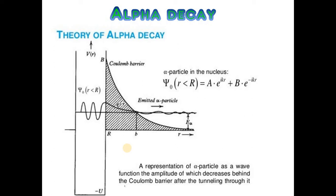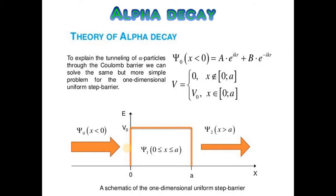A representation of the alpha particle as a wave function, the amplitude of which decreases behind the Coulomb barrier after tunneling through it. To explain the tunneling of alpha particles through the Coulomb barrier, we can solve the same but more simple problem for the one-dimensional uniform step barrier shown on the screen.